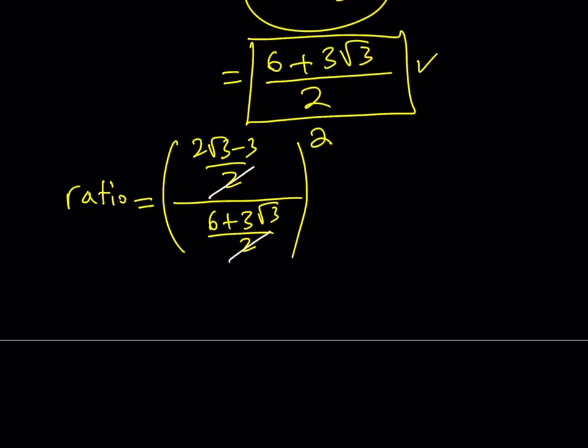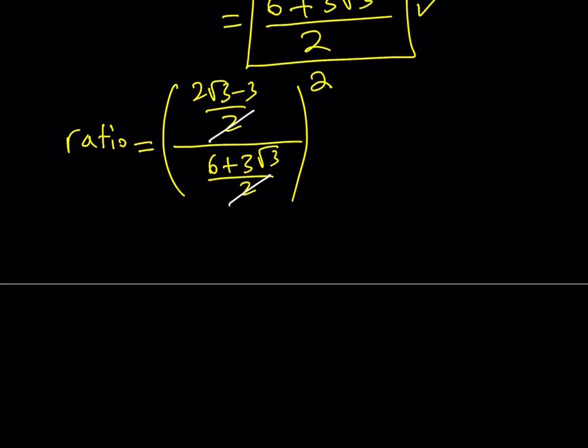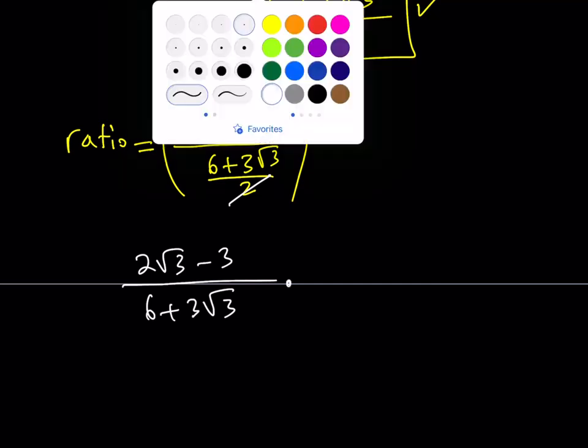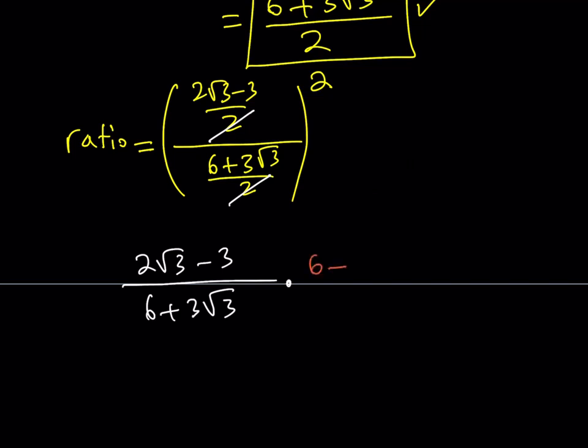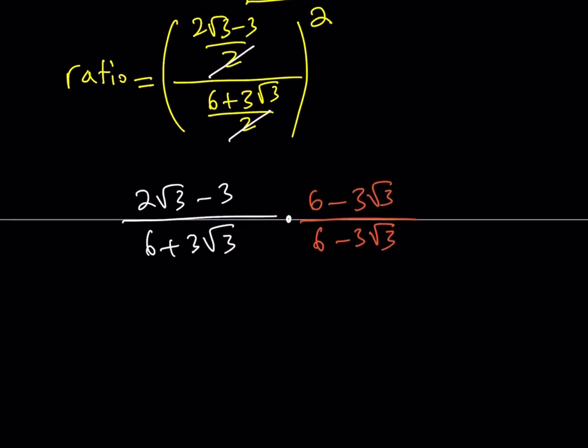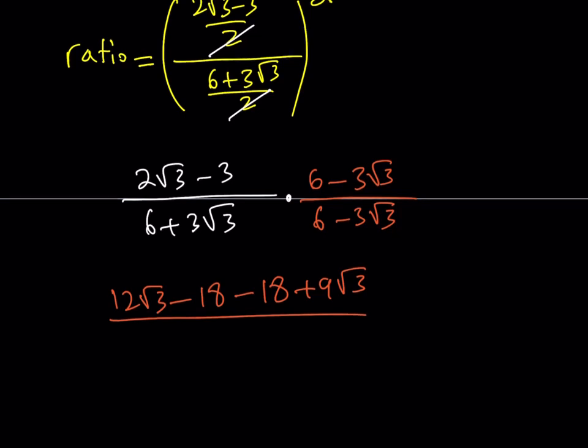The ratio that I'm looking for is going to be 2 root 3 minus 3 over 2 divided by 6 plus 3 root 3 divided by 2, and both of them are squared. So what I'm going to do is I'm going to find the ratio first and then square the quotient. Let's go ahead and proceed from here. The 2 cancels out. So what I have is 2 root 3 minus 3 divided by 6 plus 3 root 3, which obviously can be multiplied by the conjugate. The conjugate is going to be 6 minus 3 root 3 divided by 6 minus 3 root 3. Let's go ahead and distribute this. This is going to be 12 root 3 minus 18 minus 18 plus 9 root 3. And then the bottom is going to be a difference of two squares, 36 minus 27, which is 9.